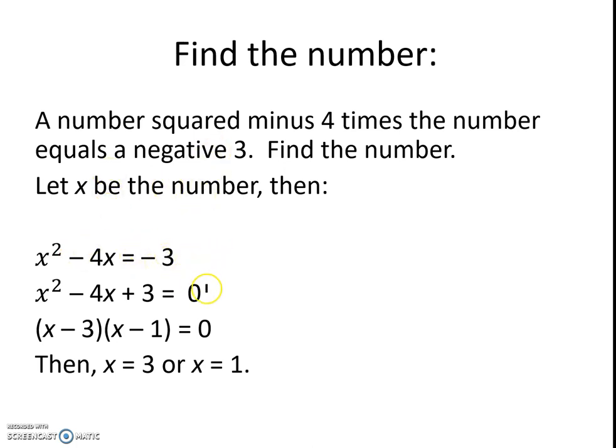So we're all set up, and we factor that after we take the 3 over to the left side by adding 3 to both sides. It factors quite nicely into the quantity x minus 3 times x minus 1. So, setting each of those equal to 0, we find that x is 3 or x is 1.